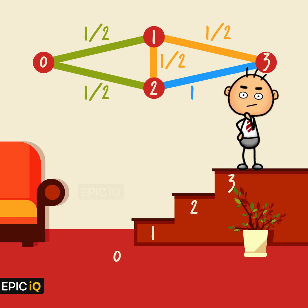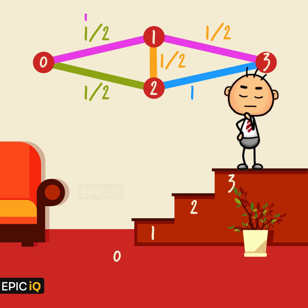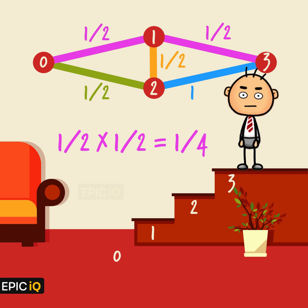Now, there is only one way in which little Ted can go from 0 to 3 without visiting the second step, which is 0, 1, 3. This probability will be P(0,1) multiplied by P(1,3), which is half multiplied by half — that is, 1 by 4.